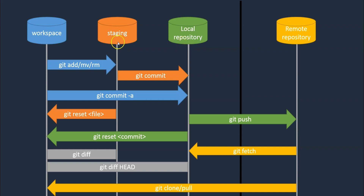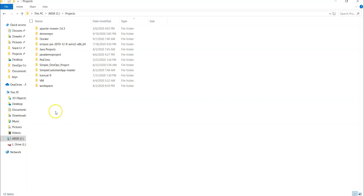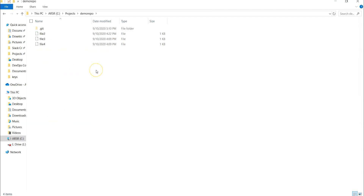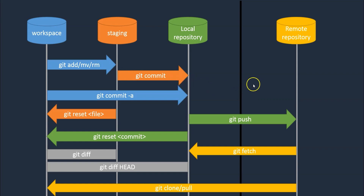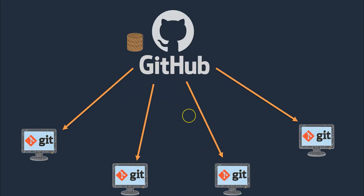We created a demo repo — let's keep that aside for now. We have created our account on a remote repository and created a repository there. That repository I would like to clone into my local system. We are concentrating on the git clone command, which will clone this remote repository onto our workspace or local system.